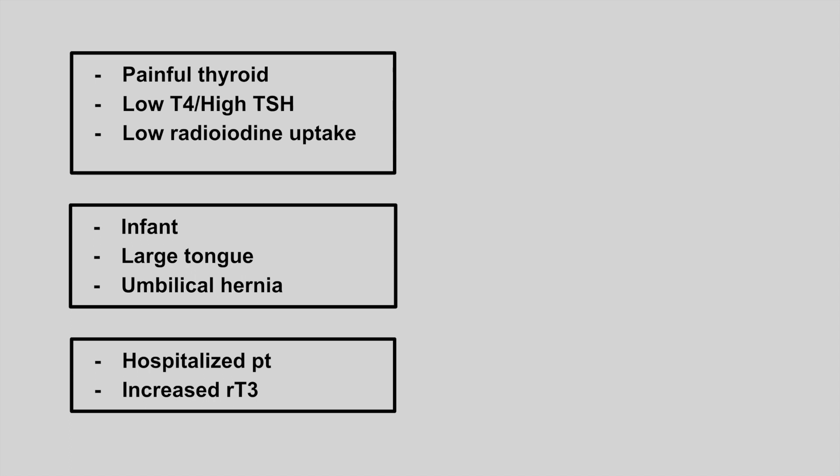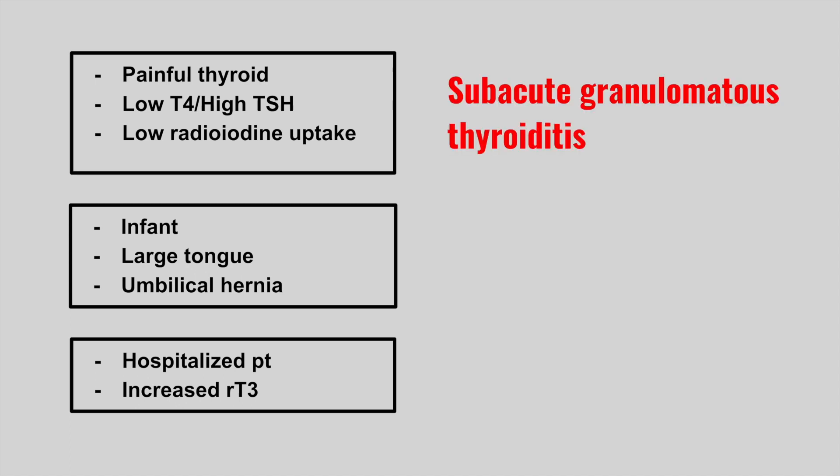The next patient has a painful thyroid, low T4, high TSH, and a low radioiodine uptake. This is subacute granulomatous thyroiditis, and the key here is the painful, tender thyroid.